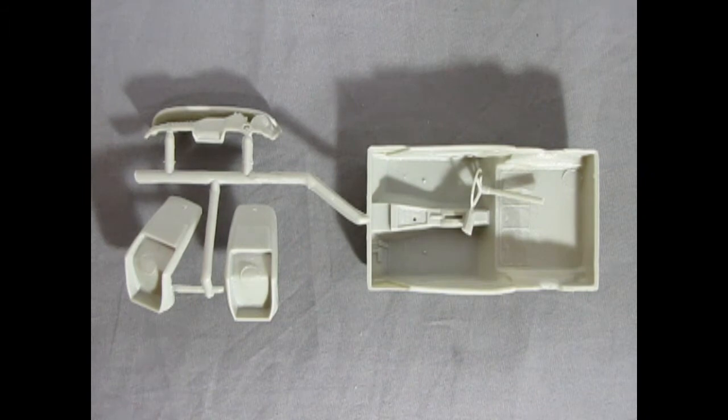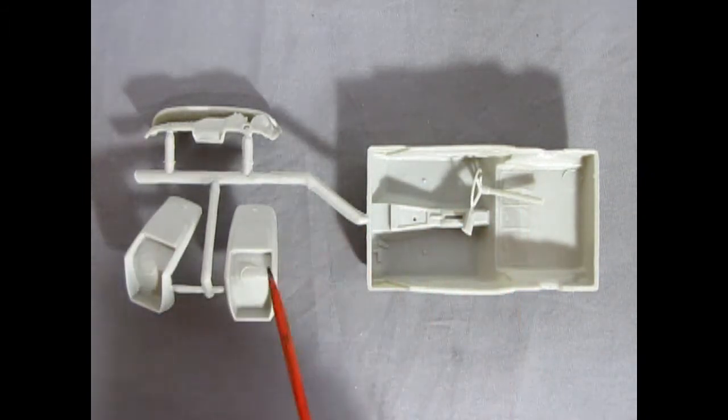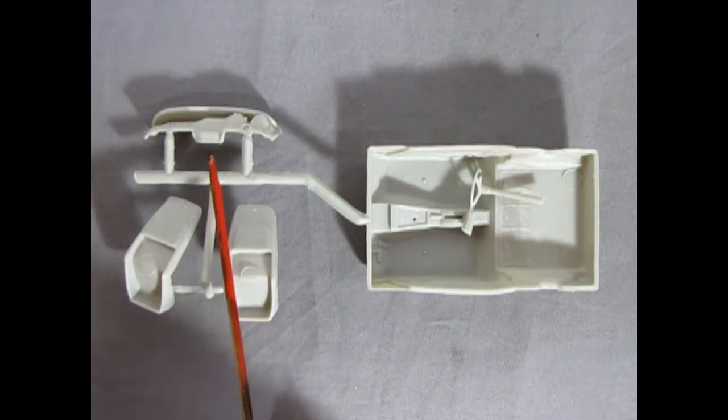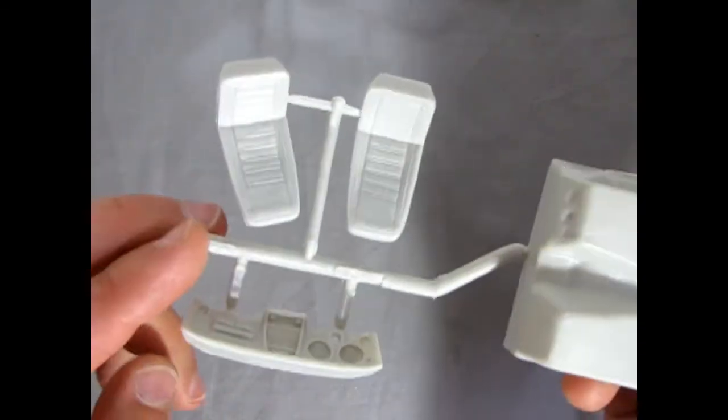And here we have our interior tub. We've got the steering wheel taped inside with a piece of scotch tape, our bucket seats, and our dashboard. And now these are upside down, so we can just as easily turn them over.